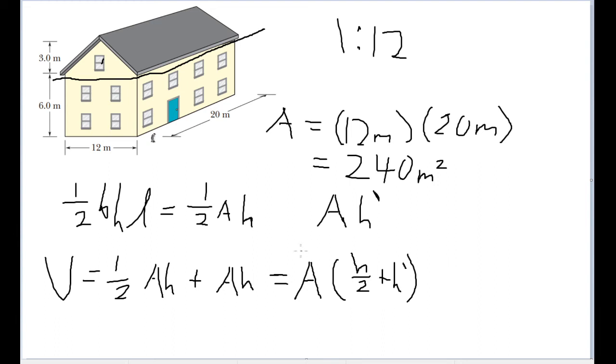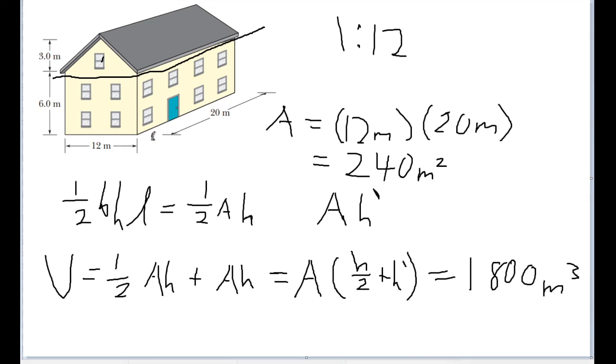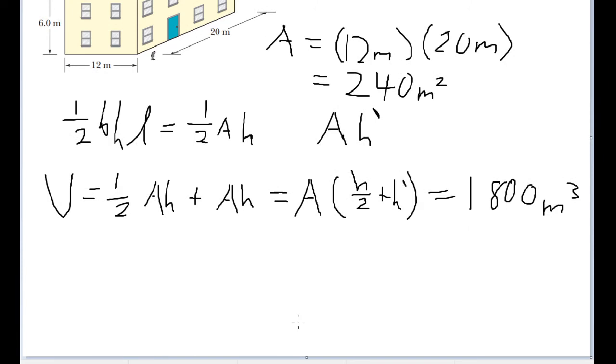Now you can just plug in the values that we have already given above. You can plug in 3.0 meters for H, plug in 6.0 meters for H prime, and the area we calculated above for the cross-sectional area of the house here. And you'll get a volume for the house of 1,800 cubic meters. So now we have the volume of a regular house.